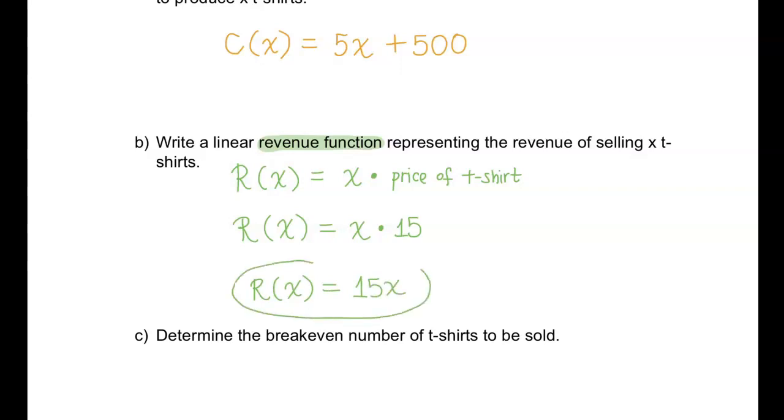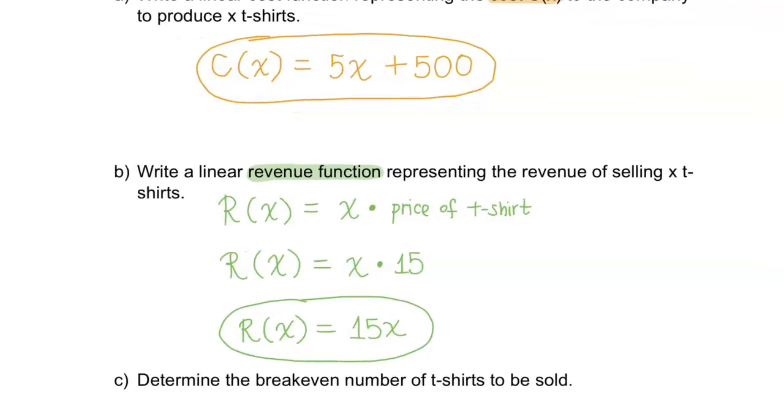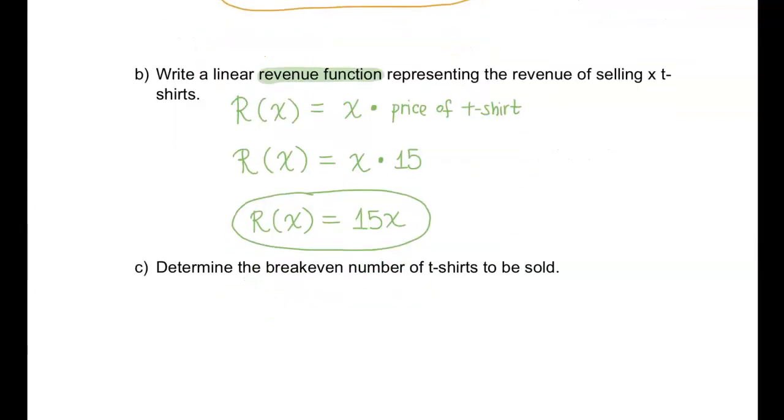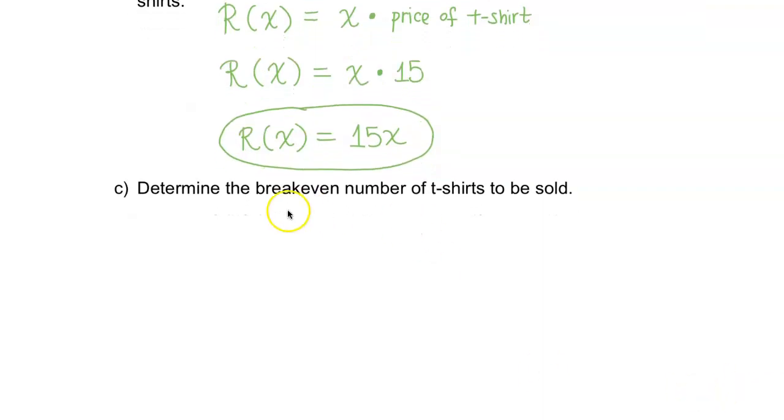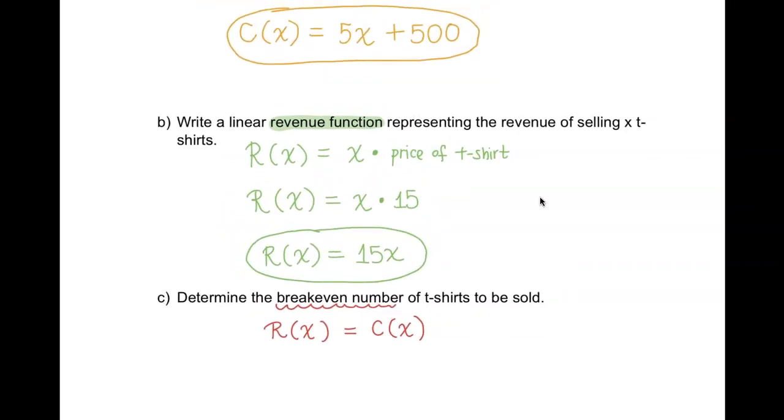We got the revenue function right here; we also have the cost function right here. They're asking us for the breakeven number of t-shirts to be sold. To find the breakeven number, what we're going to do is set the revenue equal to cost and see how many x t-shirts we need to sell to have equal revenue and cost. So revenue function R(x) was 15x, and the cost function C(x) is equal to 5x plus 500.